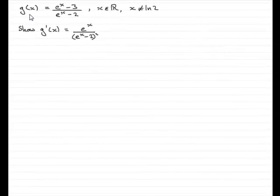Now, in this part of the question, we're given that g(x) equals e^x minus 3, all divided by e^x minus 2, where x is any real number, but x can't equal the natural log of 2. If it did, you'd end up with the denominator coming to 0, and anything divided by 0 is undefined.